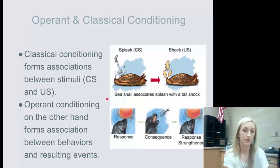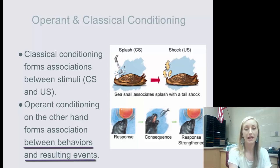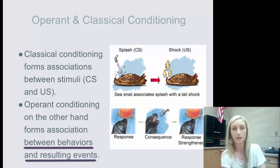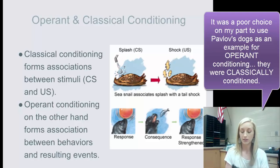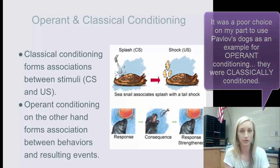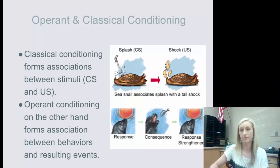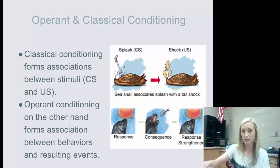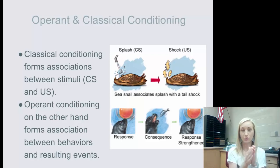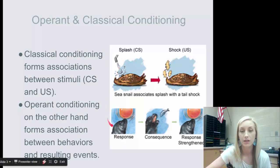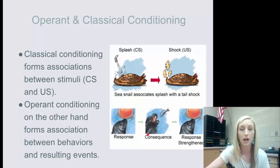In operant conditioning, you form associations between behaviors and their resulting events. If Pavlov's dogs were being operantly conditioned, and as the owner you say 'sit,' when the dog sits and gets a treat, the dog associates: every time I put my butt on the floor, I get a yummy snack. They're associating the behavior of sitting with the consequence of the snack — as shown in the diagram with the seal balancing the ball on his nose and getting a fish as a consequence.